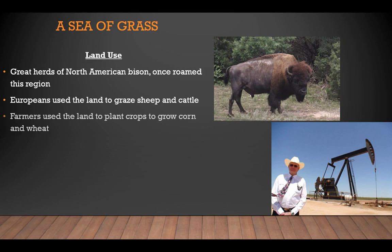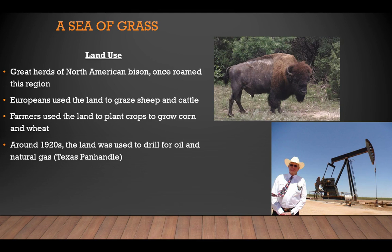After the Spanish left Texas and the land reverted to American control, the Great Plains were used by farmers who came to the region to practice their trade. They plowed up much of the grassland to plant crops like corn and wheat. Around the 1920s, men came to Texas looking for oil in what we know as the Texas Panhandle. Because of all this rapid development, particularly in the 1930s, the area suffered an extreme drought. The result was what we call the Dust Bowl, as lack of rainfall, high winds causing erosion, and rapid crop production led to the near collapse of the region.